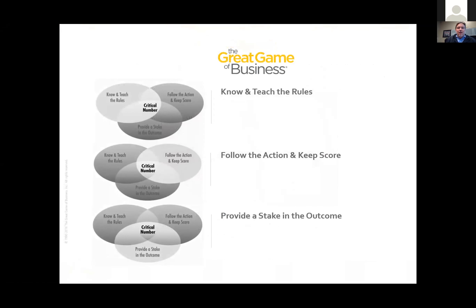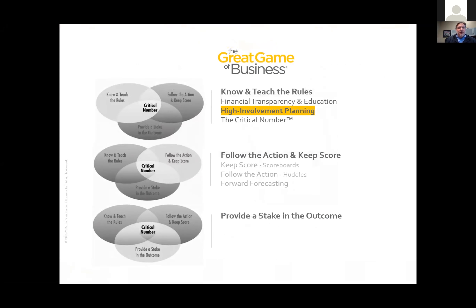Those principles are centered around specific practices we teach. In Know and Teach the Rules, there's financial transparency and education, the idea of the critical number, and the high involvement planning process. Follow the action is about keeping score and scoreboards, following through a series of huddles, and forward forecasting. Staking the outcomes covers reward and recognition, mini games, and ownership — all practices that make up the overall Great Game of Business process.